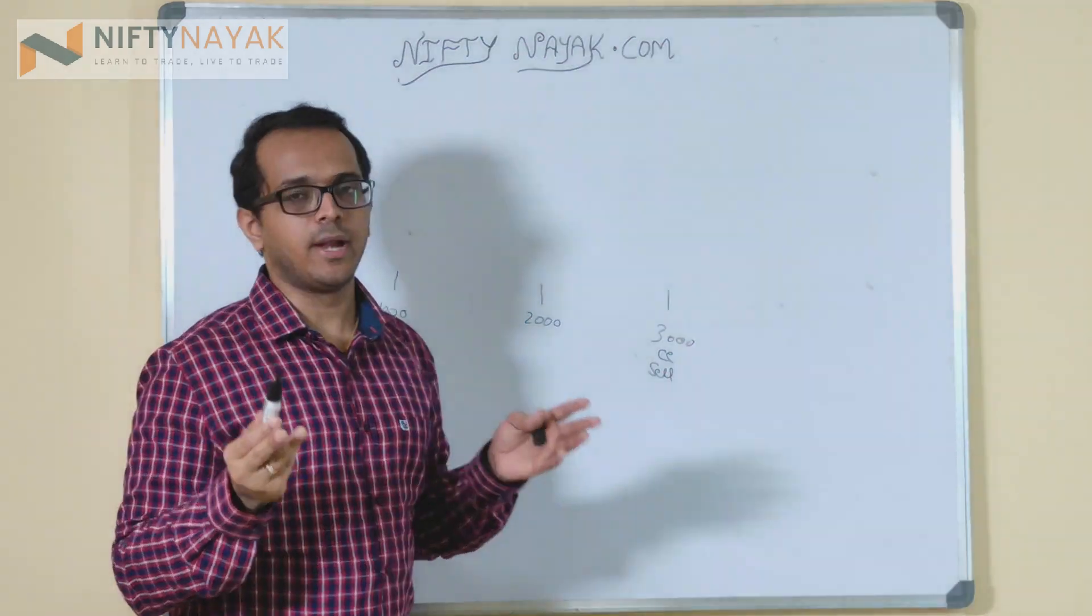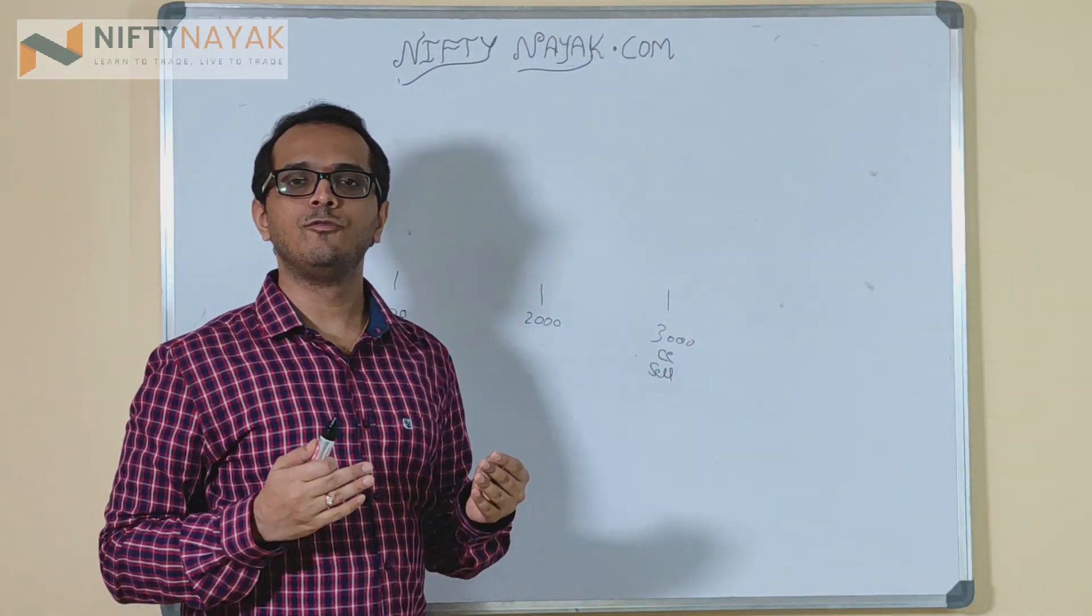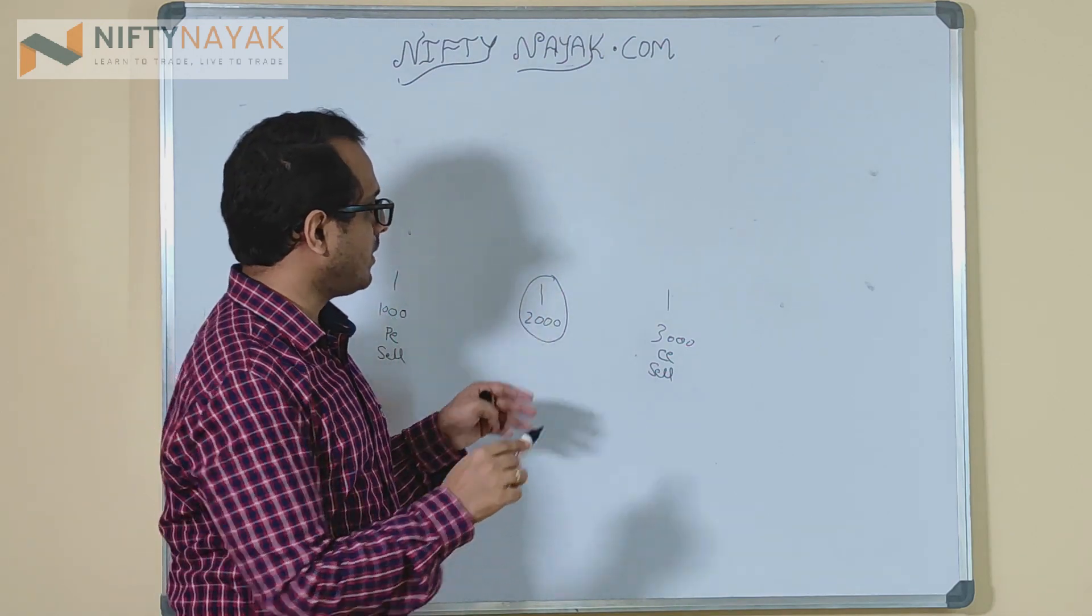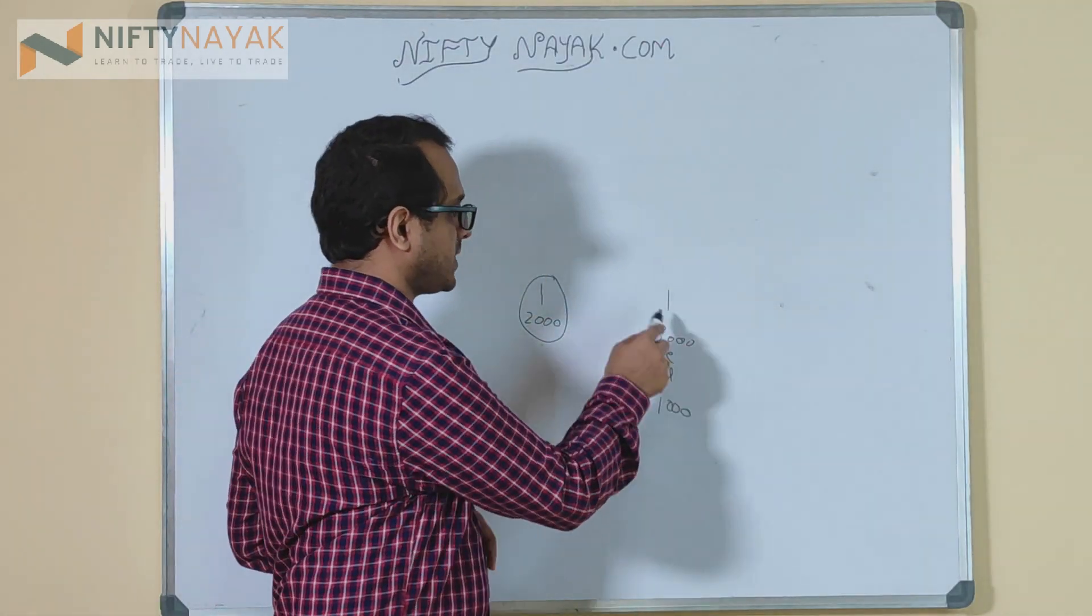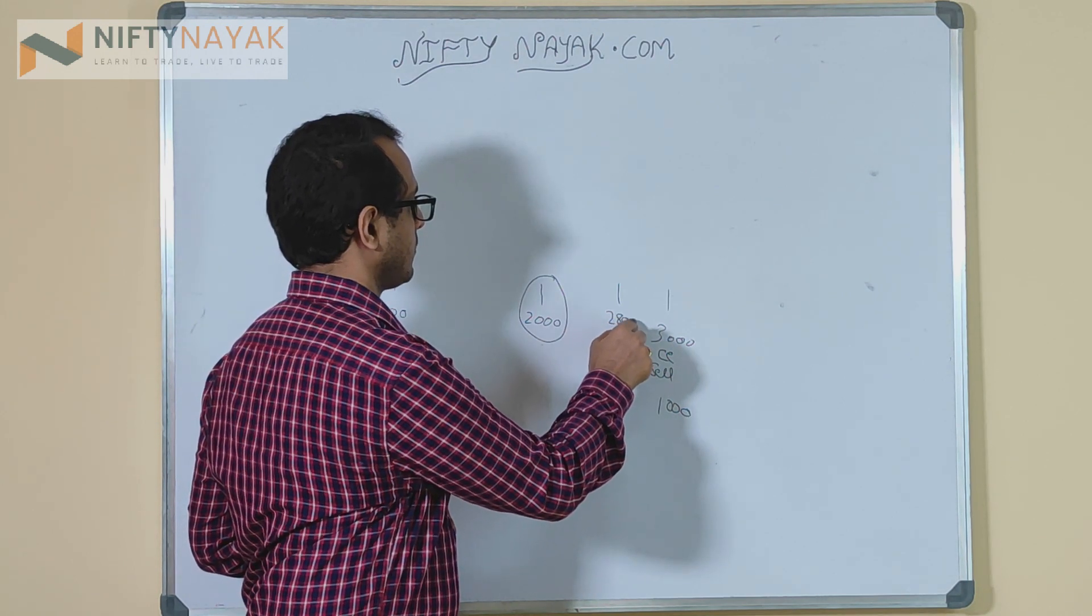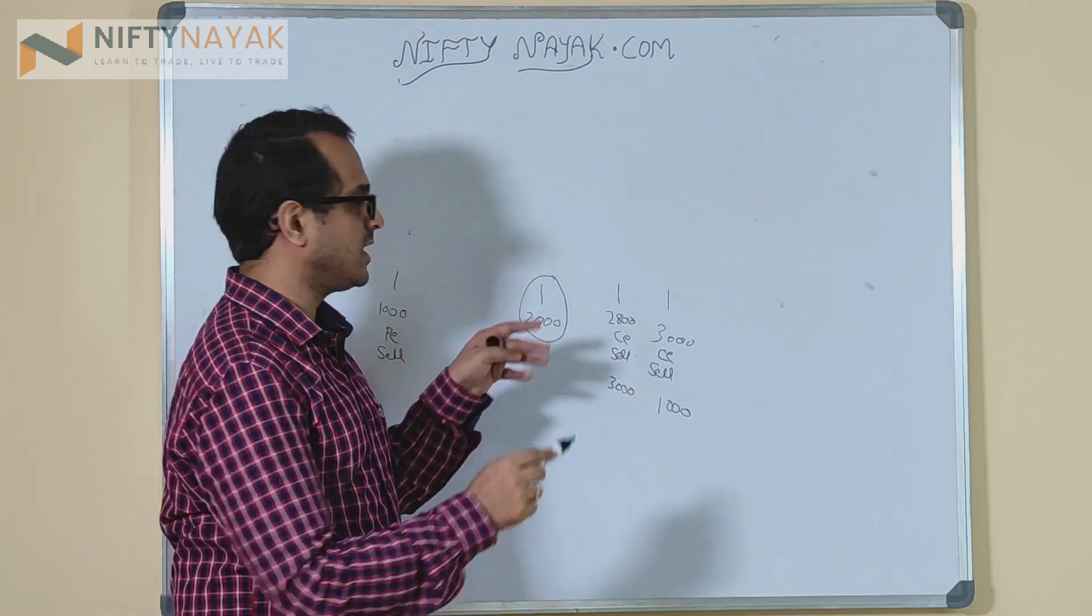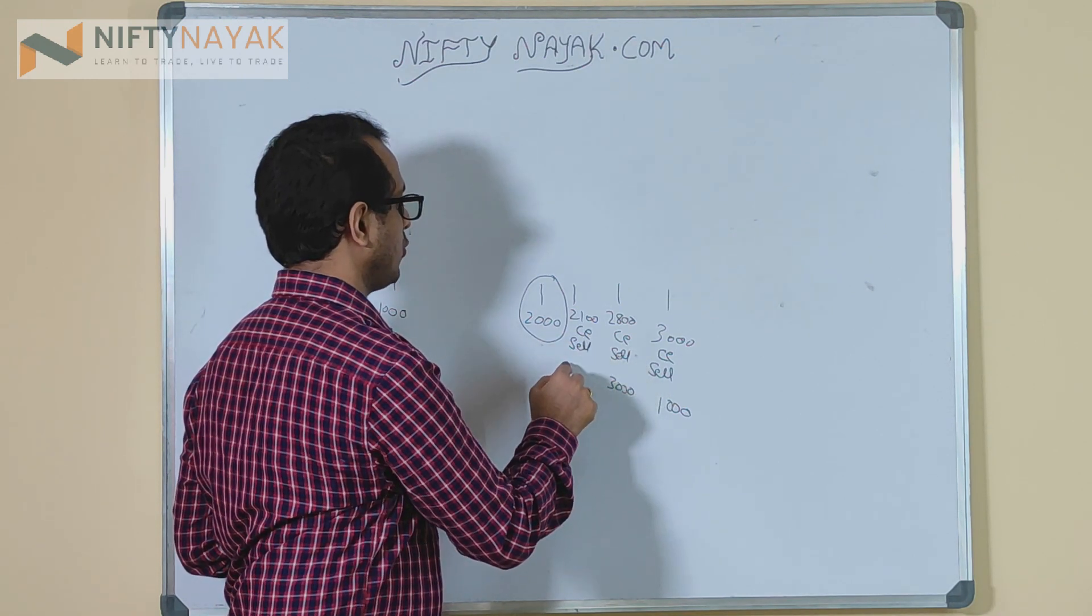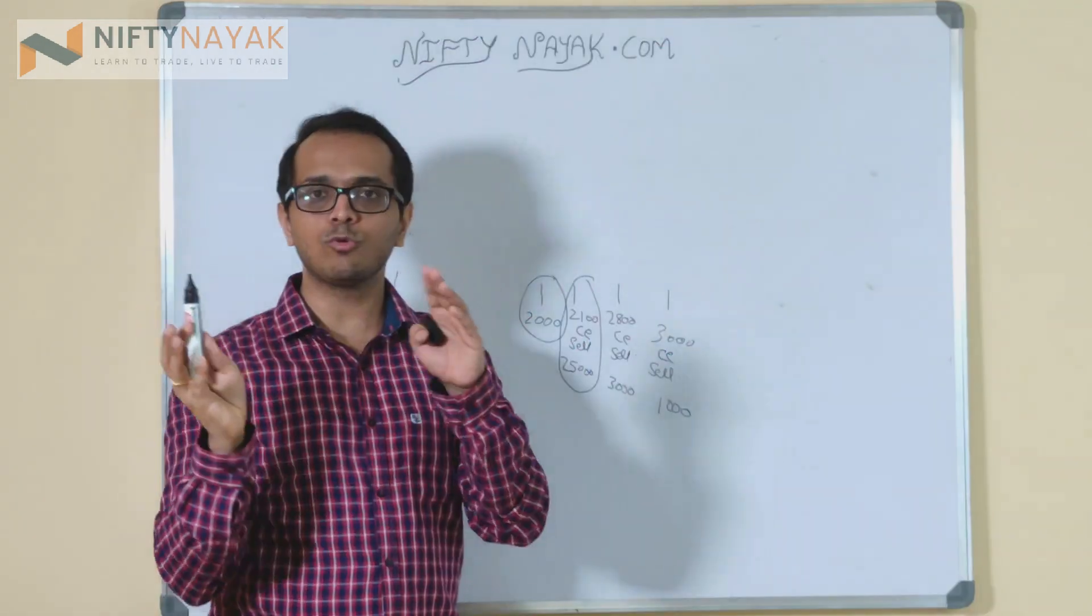If you win the bet, like if Reliance does not go to 3000 or if Reliance does not go to 1000, you will make a profit. Now if you want to increase your profit then you have to be closer to the strike. For example, if you make 1000 rupees profit by selling this call option, if you sell something at 2800 call you will be making 3000 rupees. If you sell something at 2100, you will be making 25,000 rupees. But the risk here will be very very high.